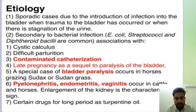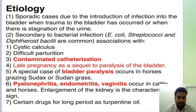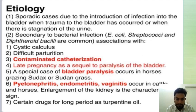Secondary to bacterial infection — E. coli or Streptococci — associated with cystic calculus, difficulty in parturition, contaminated catheterization, and bladder paralysis. Pyelonephritis, endometritis, or vaginitis occur in cattle and horses.